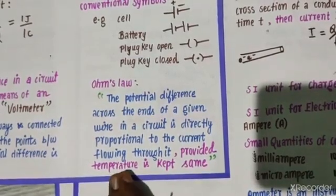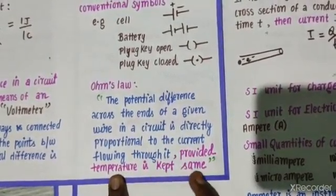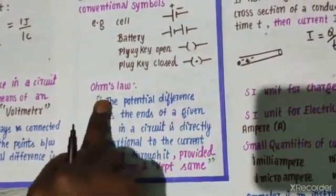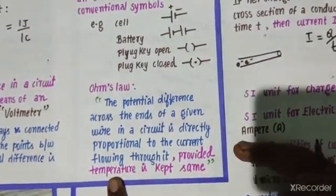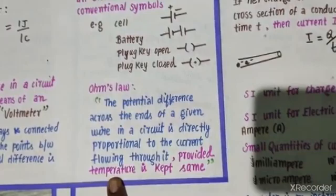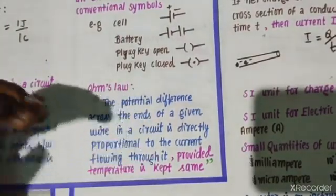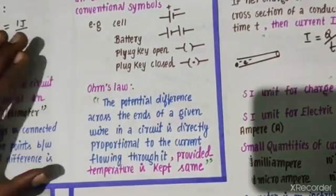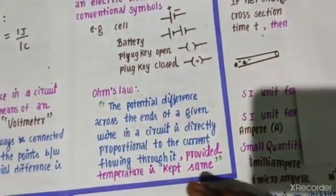But you have to remember the condition - the temperature has to be kept the same. Temperature has to be constant. They will ask you this condition. So what is the necessary condition? Temperature has to be the same. So if the potential difference is varying, then current also varies. Potential difference increases, current increases. Potential difference decreases, current decreases.